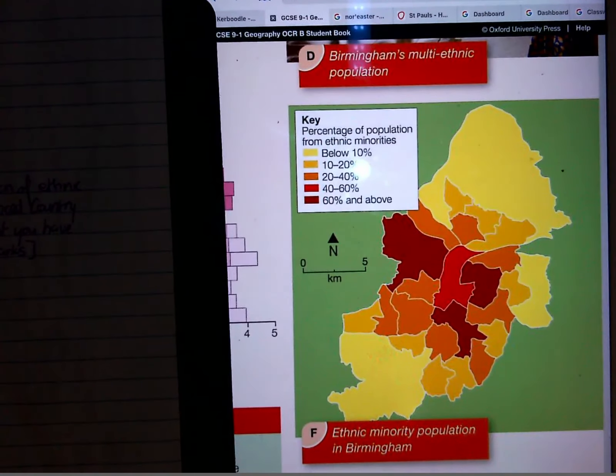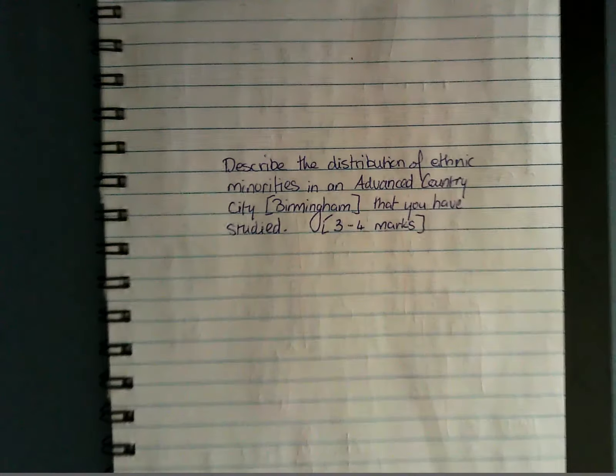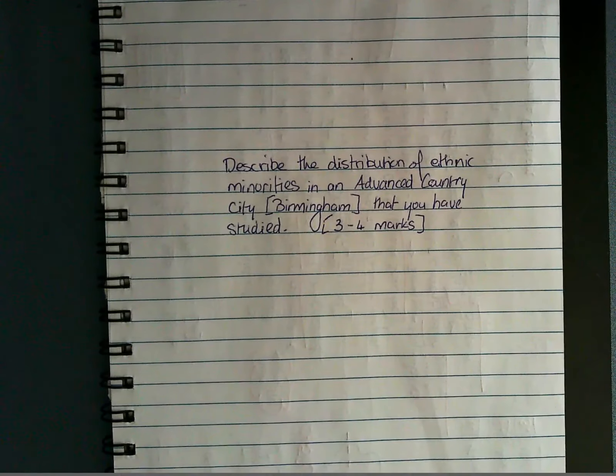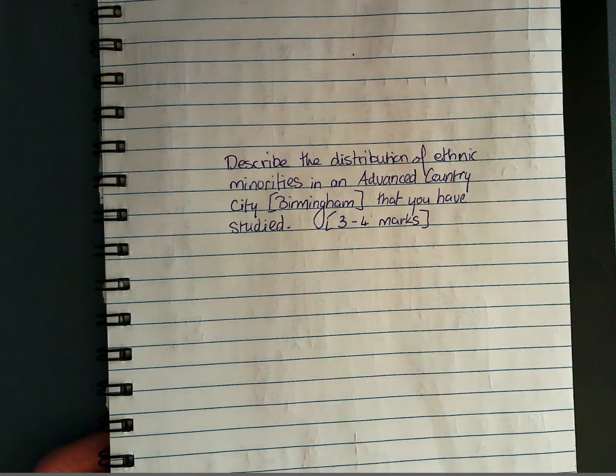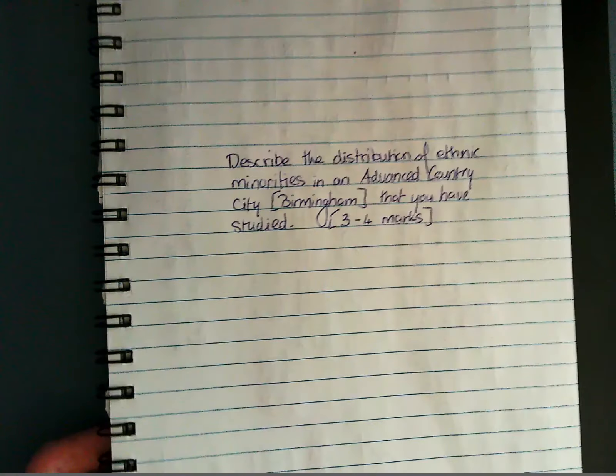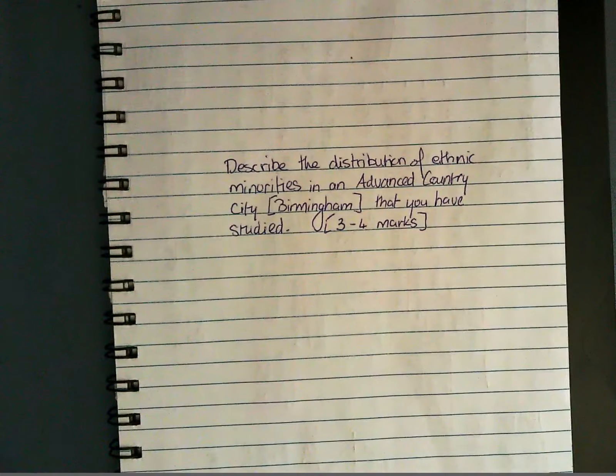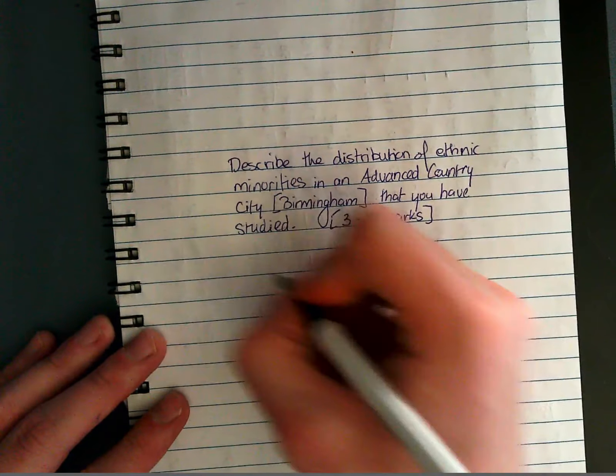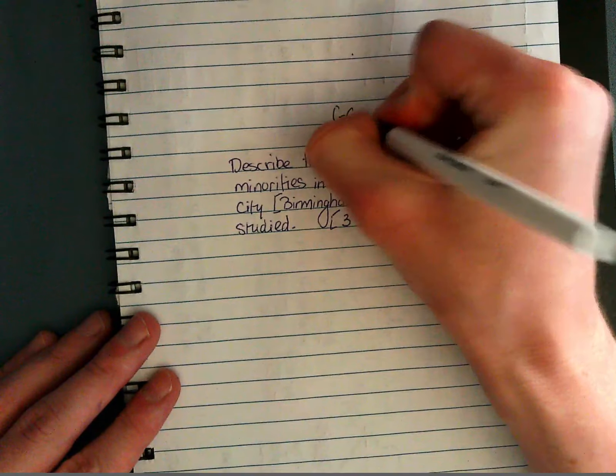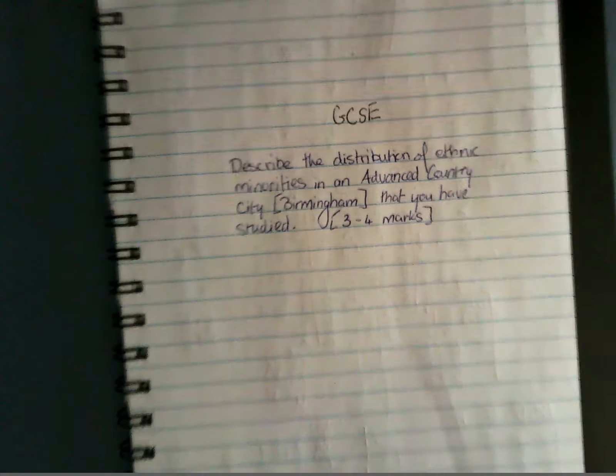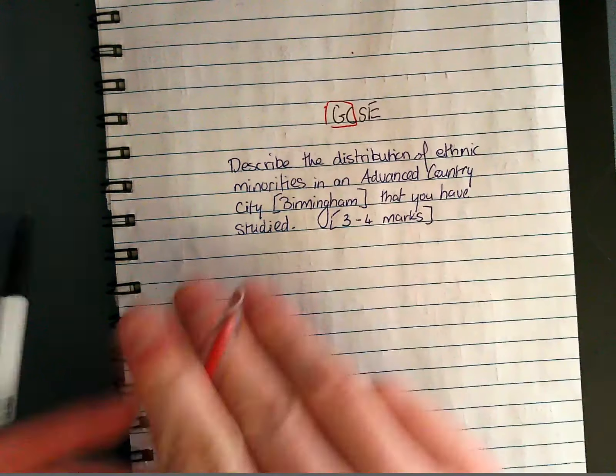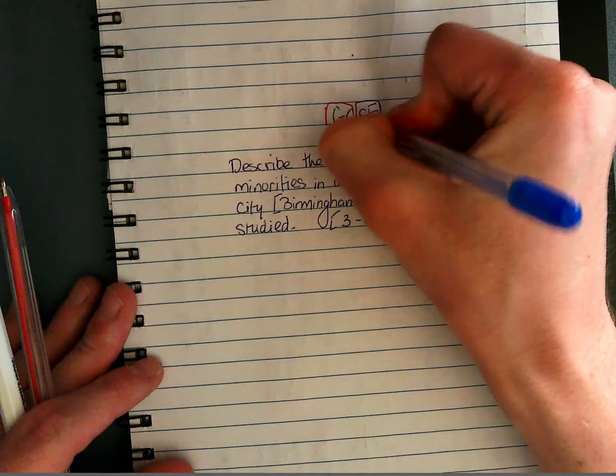So how do we answer this question which I've got in front of me here which is describe the distribution of ethnic minorities in an advanced country that you've studied. Okay and I'm going to be flicking back and forward between this map. So what structure are we going to be using? We're certainly going to be using the general comment and specific example structure so I'm going to put that here GCSE and that stands for general comment and specific example. Red is going to be my general comment and blue is going to be my specific example.